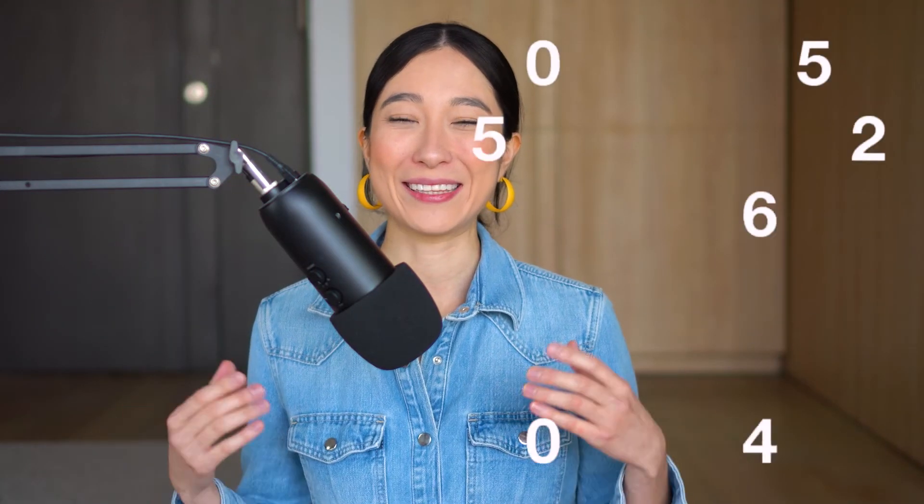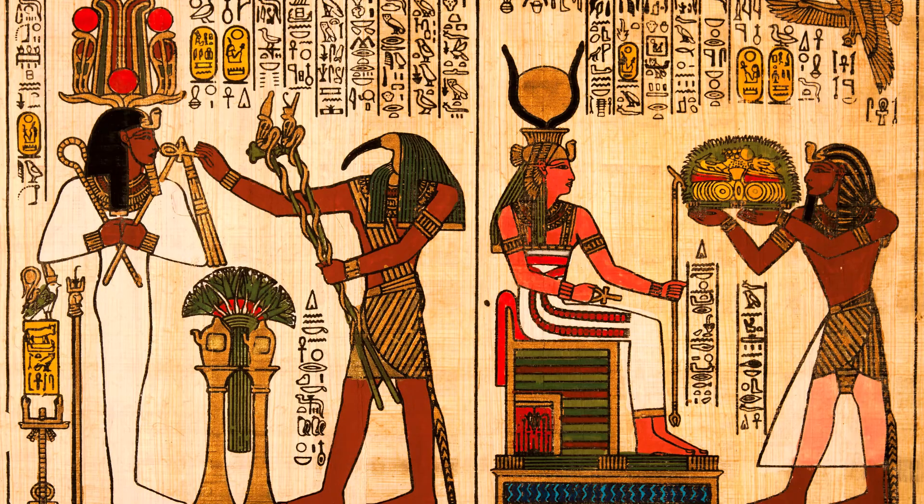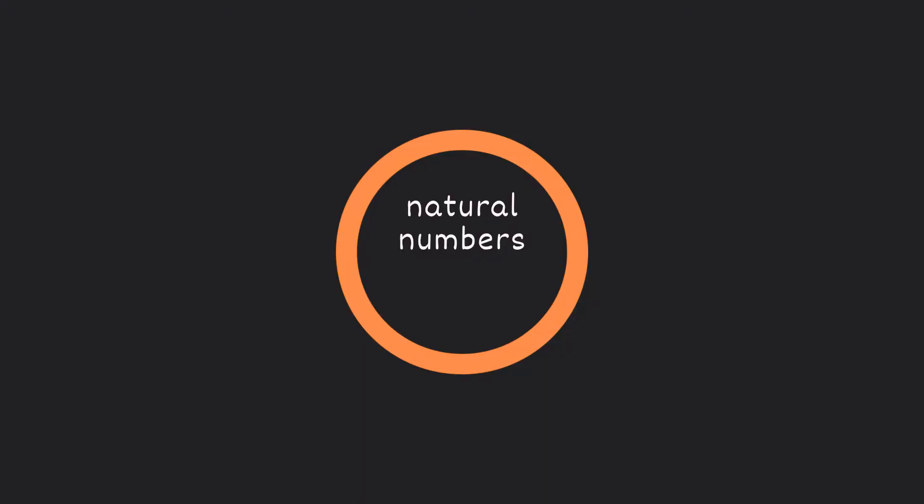So to learn all these, let's travel all the way back to the Egyptians and the Babylonians when they first came up with what we call natural numbers. These are numbers that we use every day like 1, 2, 3, 4, 5 and so on.